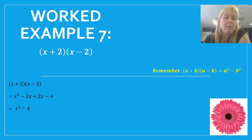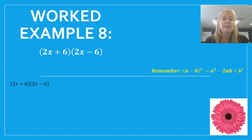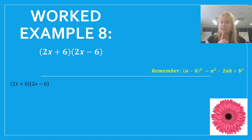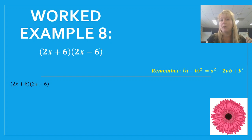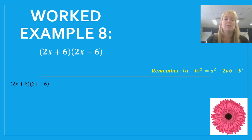For the next examples we'll go straight to our final answer using the DOPS pattern. With 2x plus 6 times 2x minus 6: I can see two sets of brackets, the first terms are the same, the second terms are the same, and they differ only by the sign — so it's DOPS. Using the rule: first term 2x squared gives 4x squared, then subtraction, and last term 6 squared gives 36. So the answer is 4x squared minus 36.